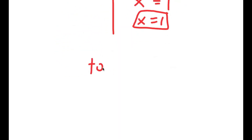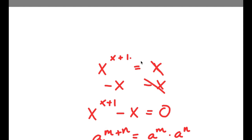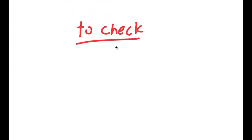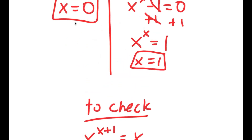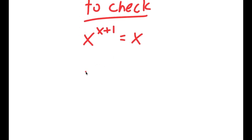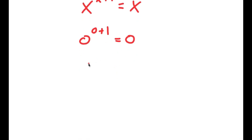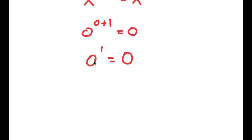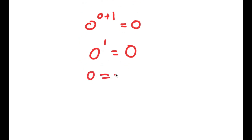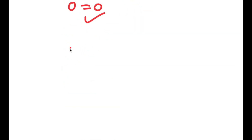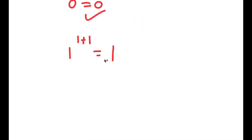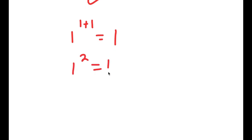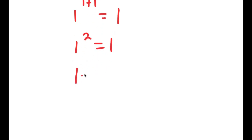Now to check: the original equation was x to the power of x plus 1 equals x. For x equals 0: 0 to the power of 0 plus 1 equals 0, so 0 to the power of 1 equals 0. And 0 to the power of any number is 0, so 0 equals 0. ✓ For x equals 1: 1 to the power of 1 plus 1 equals 1, so 1 to the power of 2 equals 1. And 1 to the power of any number is 1, so 1 equals 1. ✓